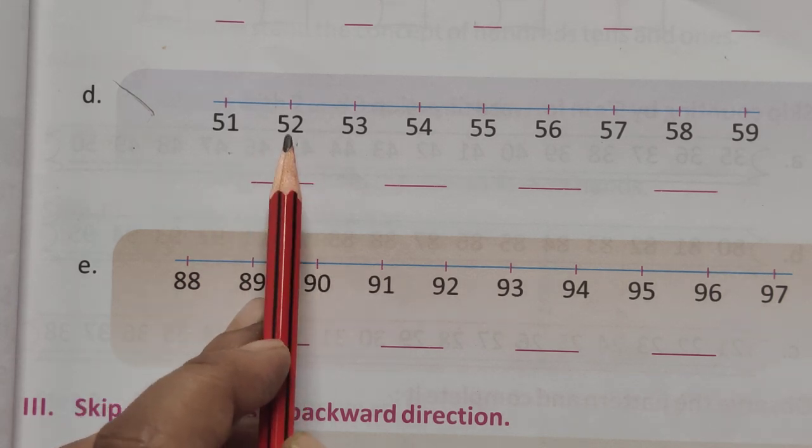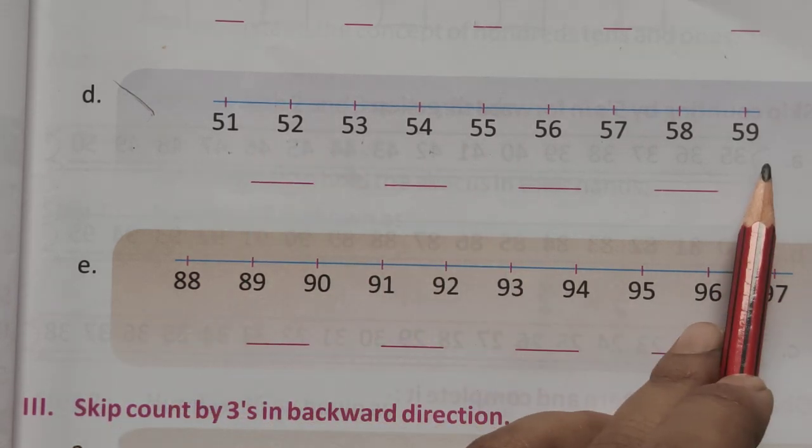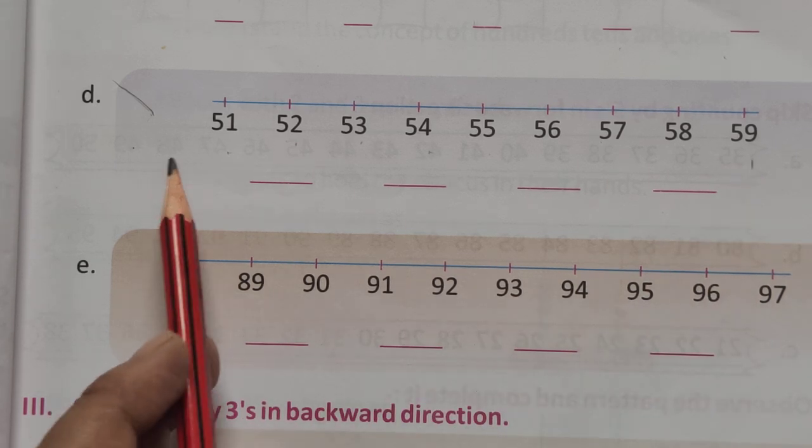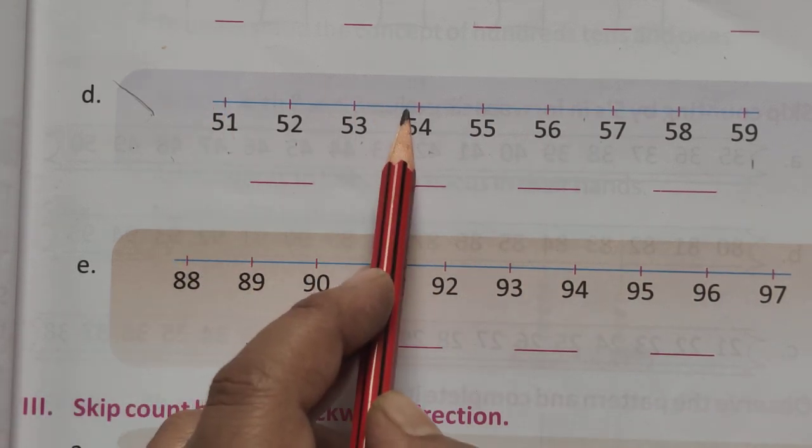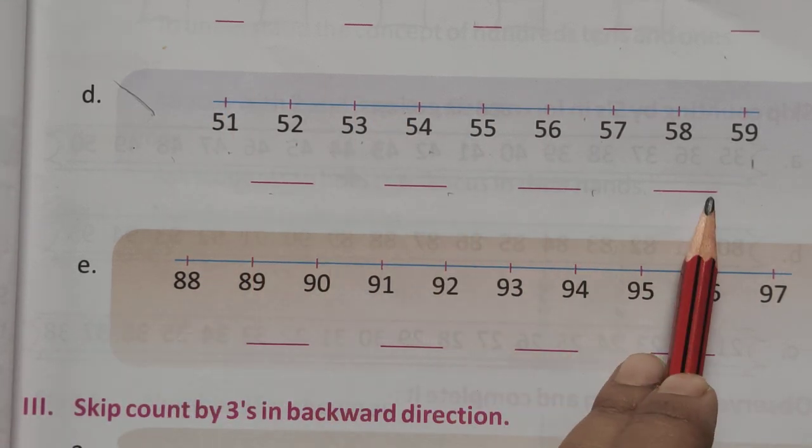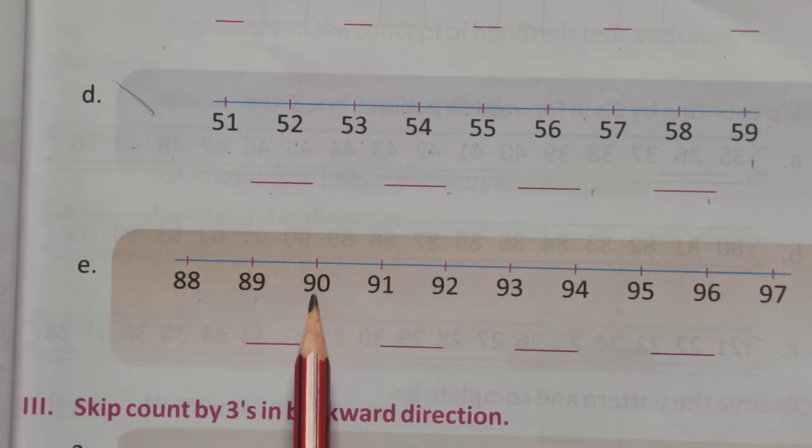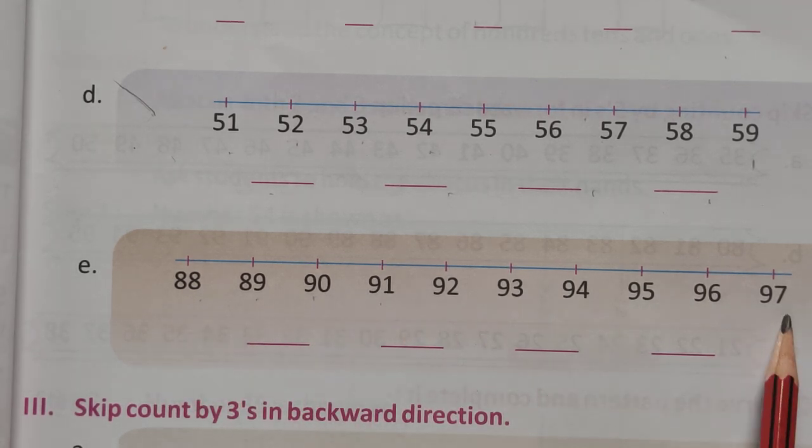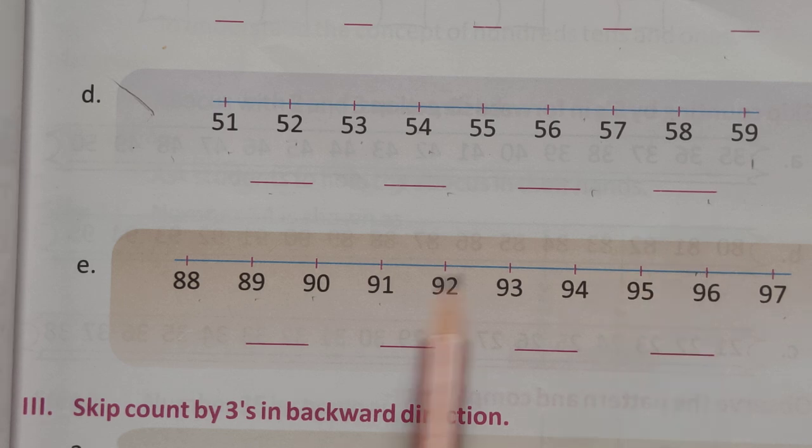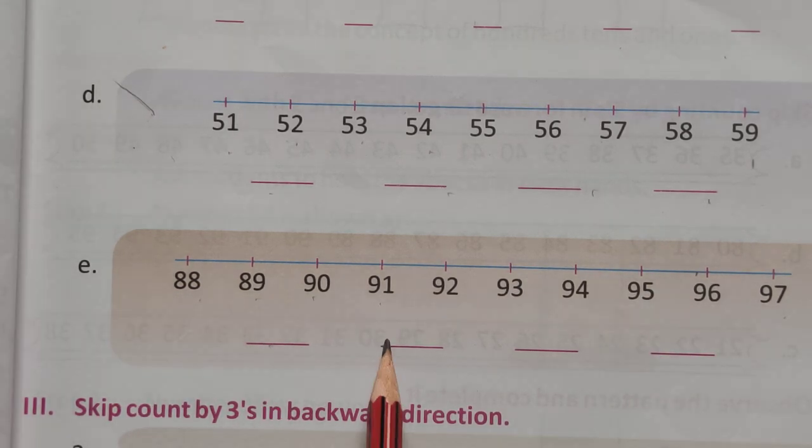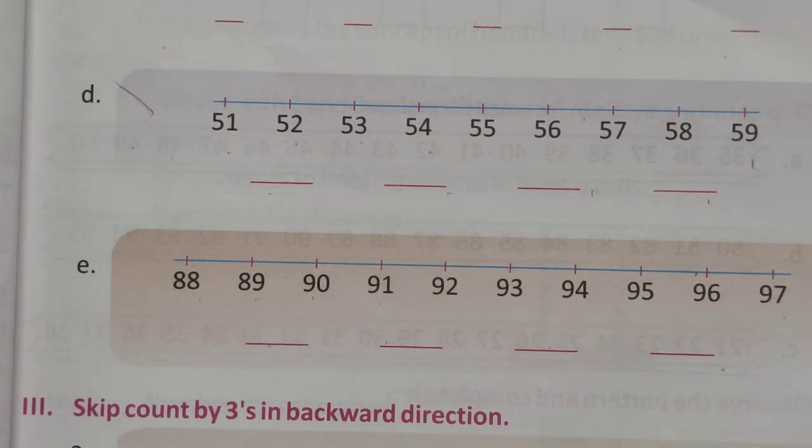51, 52, 53, 54, total 59. Skip by 2. Count. Jumping again and this number is right now. Okay. The next one is 88, 89, 90, 91 to 97. Skip by 2. Counting. Jump again and number this now. Okay. Is that clear?